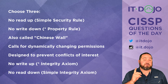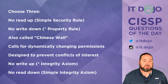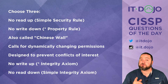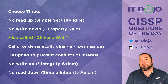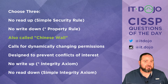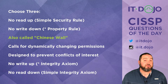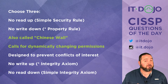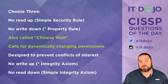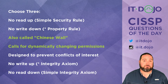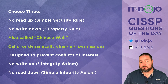The next answer choice: Brewer and Nash is also called the Chinese Wall — that is true, that's absolutely the name most commonly associated with it. The next answer choice says that it calls for dynamically changing permissions — this is also true. This is one of the more interesting caveats to how the Chinese Wall is supposed to work; the permissions need to be able to change dynamically based upon things that have taken place.